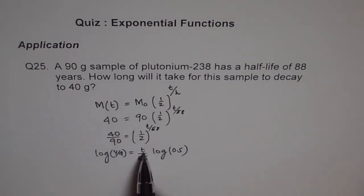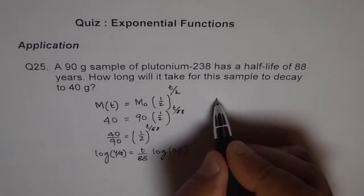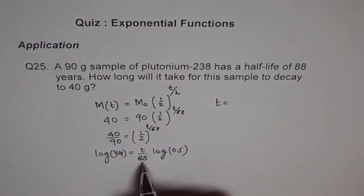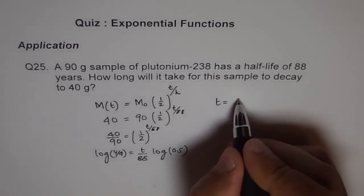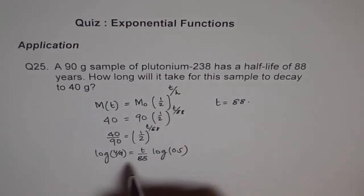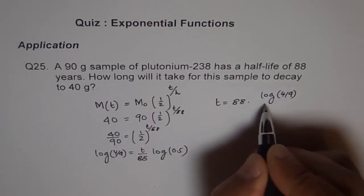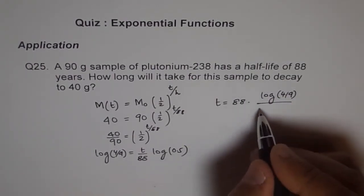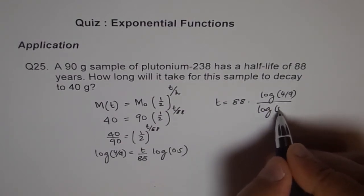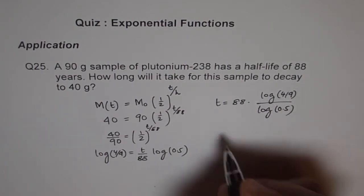Now from this equation, we can find time. So let me write here, T is therefore equal to 88 times log 4 over 9 divided by log 0.5.